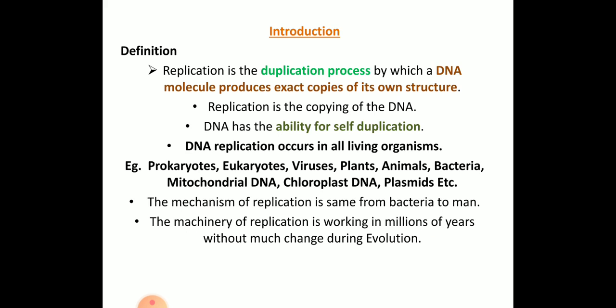Replication involves the copying of DNA, and DNA has the ability of self-duplication. It takes place in prokaryotes and eukaryotes, viruses, plants, animals, bacteria, and even mitochondrial DNA, chloroplast DNA, and plasmids. This mechanism of replication is the same from bacteria to humans.